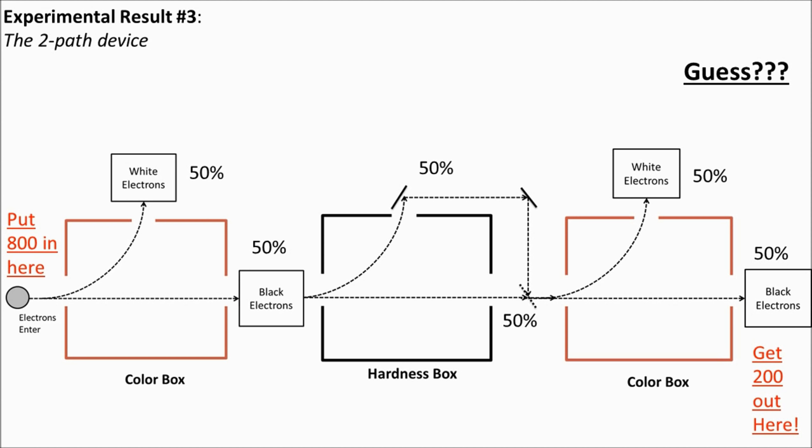But when we do the experiment, once again we don't get what we expect. Instead of 200 electrons coming out of the black hole of the last color box, we get 400 electrons. That means all of the electrons that went into the last color box were black, and zero were white. No matter how long we run this experiment, we never, ever get a white electron coming through the last color box.